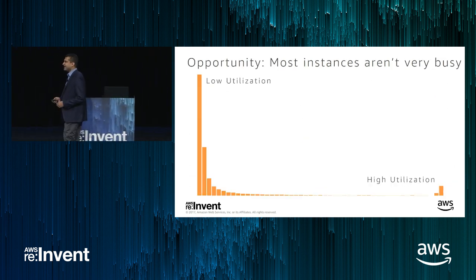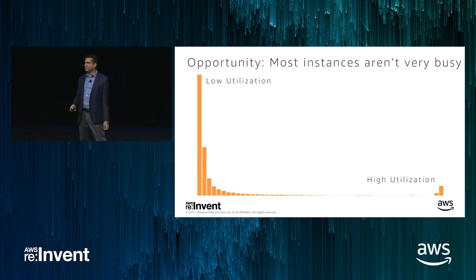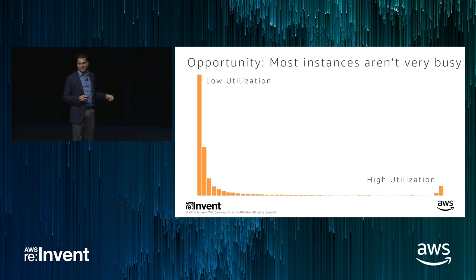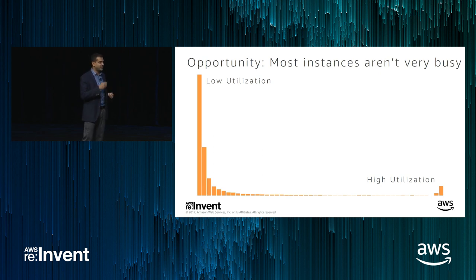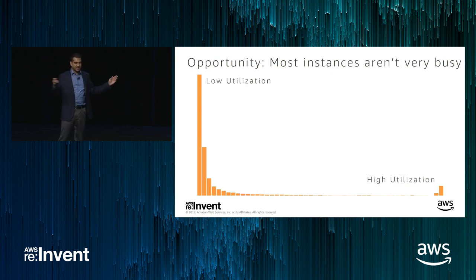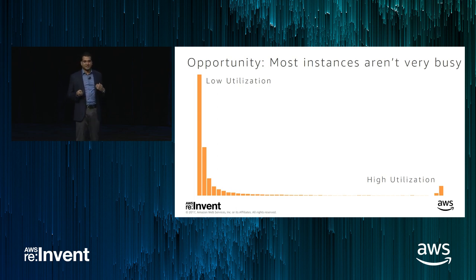When we look at the use of general-purpose instances across the fleet, we notice something: they're not very busy. Most instances sit at 0% to 20–30% CPU utilization. There are spikes, but on average that's where we see them. This was an opportunity to oversubscribe our instances and pass those savings to customers.